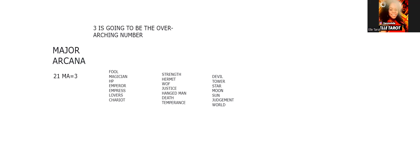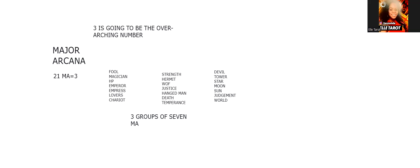So we've got all of our major arcana, comprised of 21 cards. What we've done is broken them down into three groups — back to three, our overarching number. We've broken them into three groups of seven, because seven times three equals 21. So we have three groups of seven major arcana.